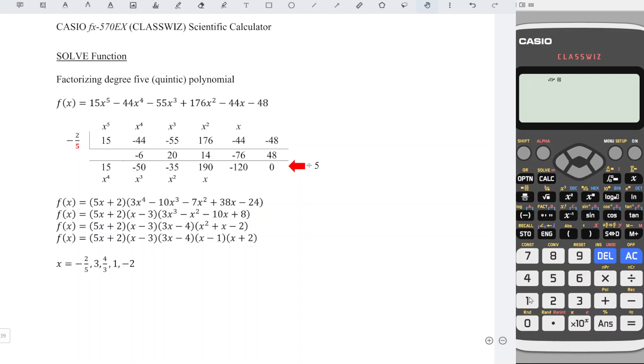First, enter the function given. We have 15x to the power of 5 minus 44x to the power of 4 minus 55x to the power of 3 plus 176x squared minus 44x minus 48.